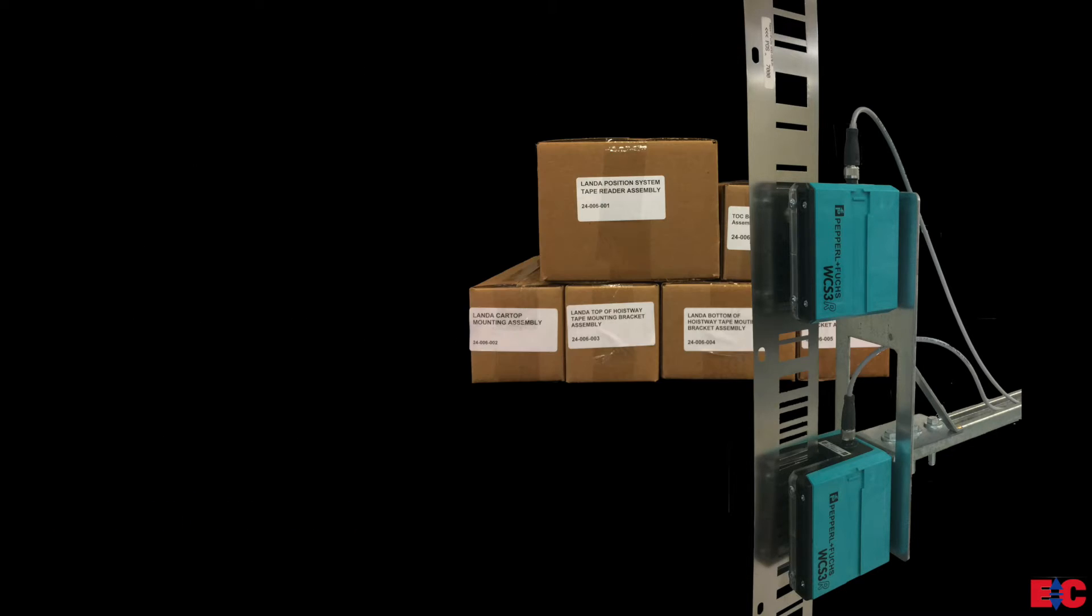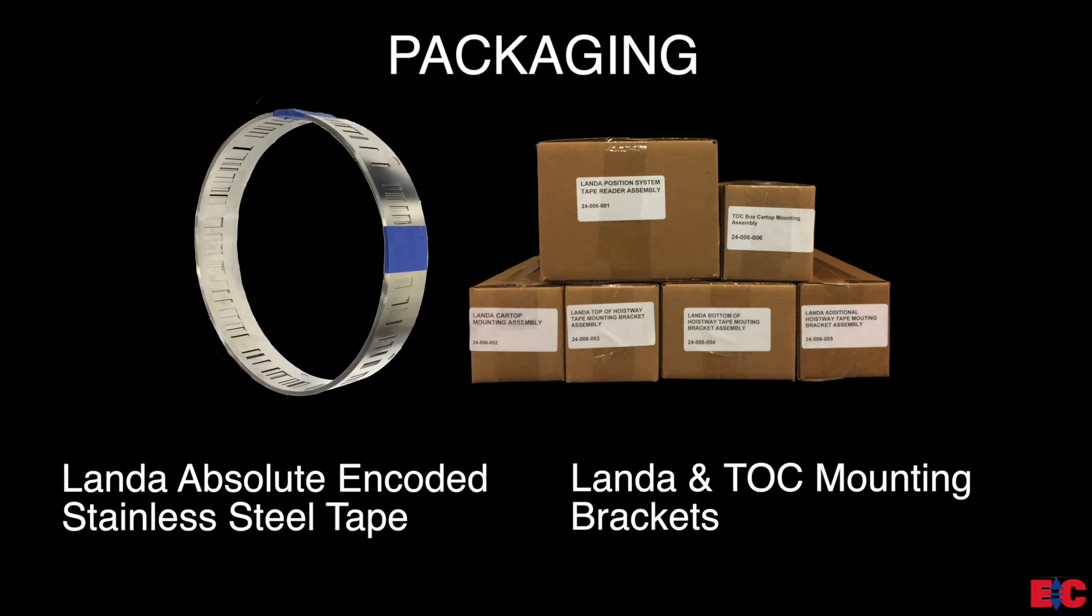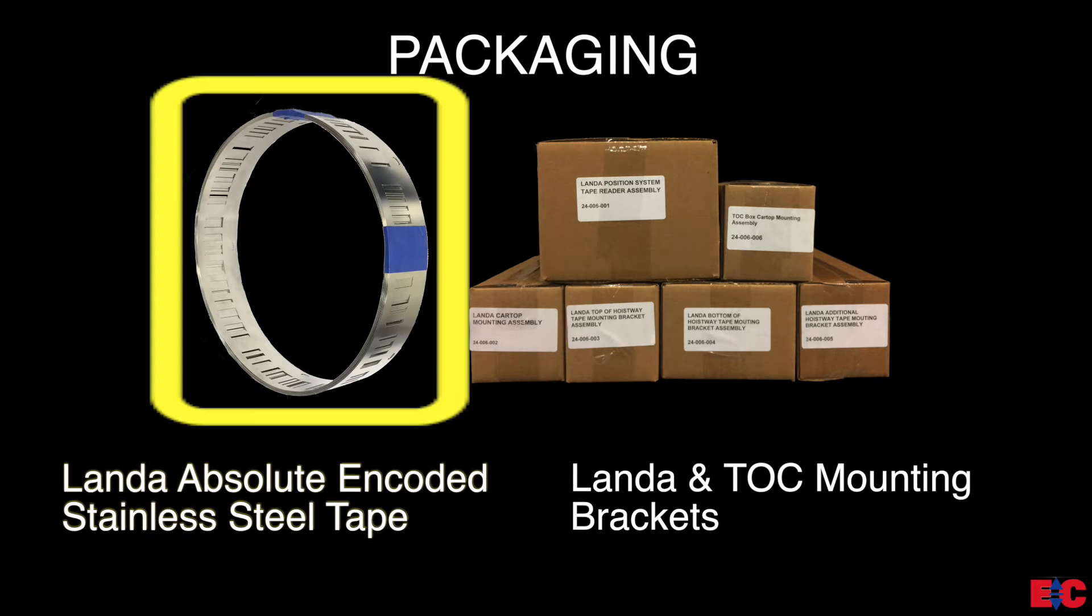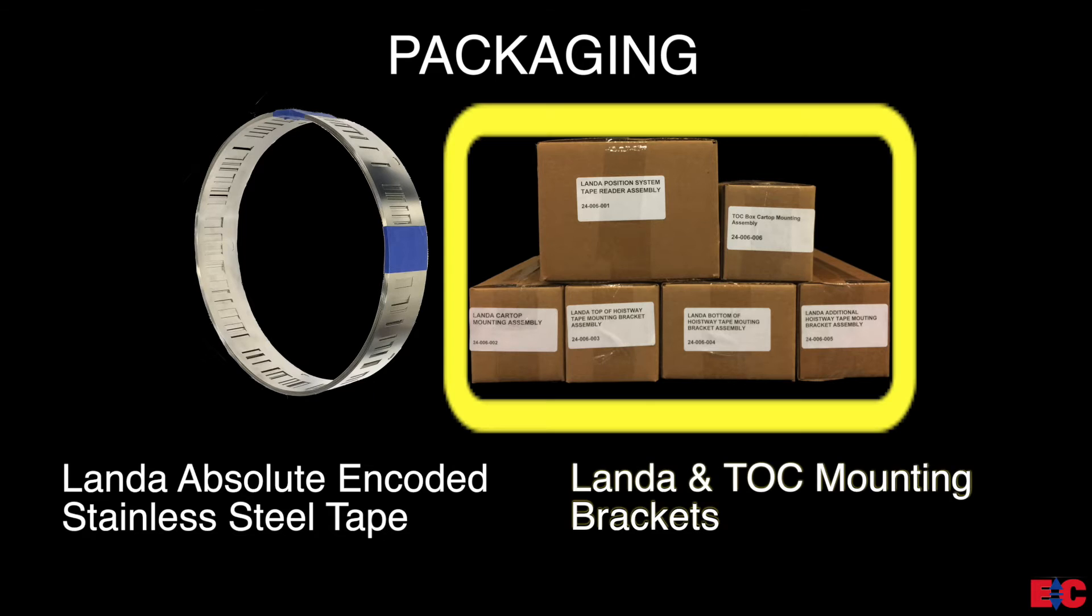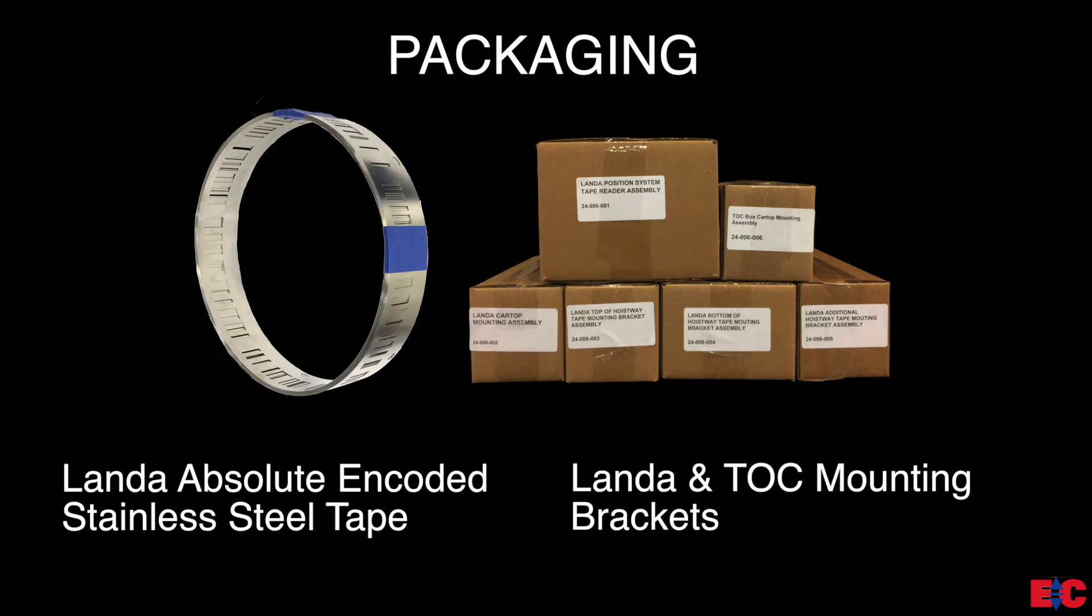Now that we have become more acquainted with Lambda, let's go over what to expect when you receive your Pixel controller system. First, you want to locate the absolute encoded stainless steel tape. And then, you want to locate the set of boxes that include the Lambda and TOC mounting hardware. You may recognize these boxes from our previous video presentation. Next, let's review the contents of the mounting hardware boxes.